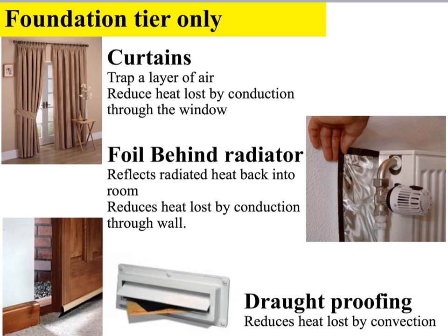Okay, here are some other methods of home insulation if you're studying for the foundation tier. Curtains, again, trap a layer of air, that's our key phrase. They reduce heat loss by conduction through the window. You can put foil behind radiators. What this does is it reflects the radiated heat back into the room. That reduces the heat loss by conduction through the walls. And then these two pictures down here show draft proofing. You can see there's a rubber seal on the bottom of the door and some bristles inside the letterbox there. Using draft proofing reduces the heat loss by convection.